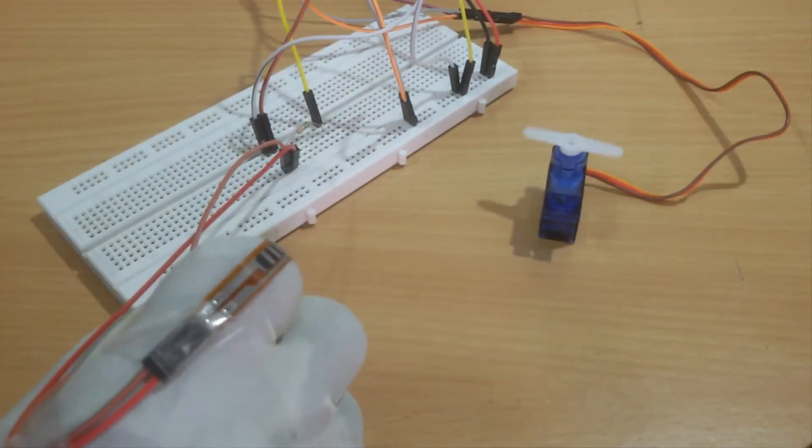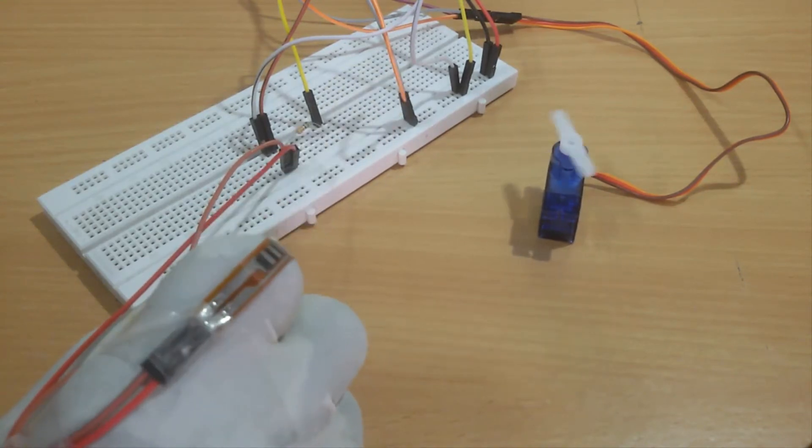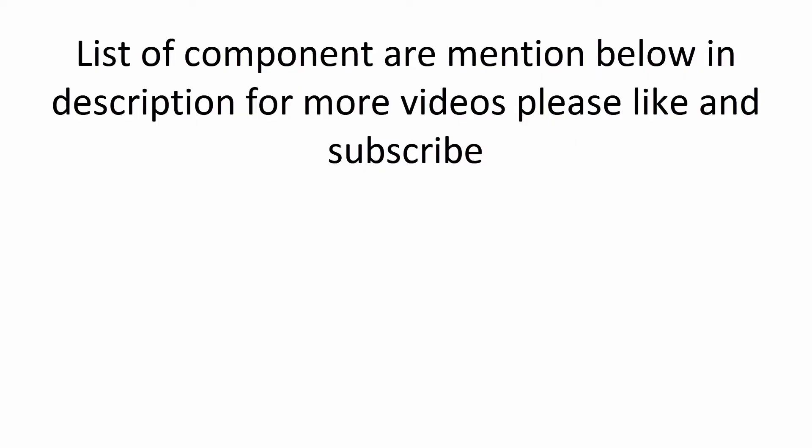You can see when I bend my finger, it rotates anti-clockwise. When I straighten my finger, it rotates clockwise. List of components are mentioned below in the description.